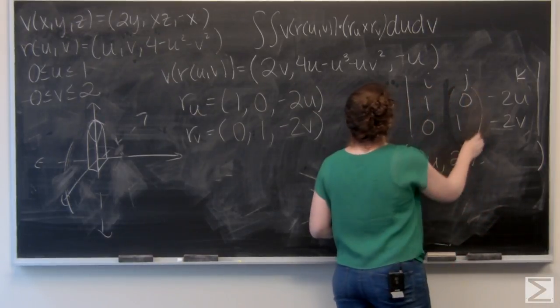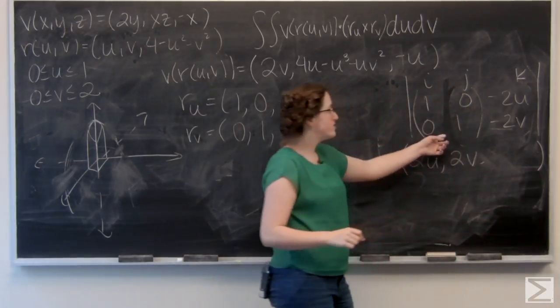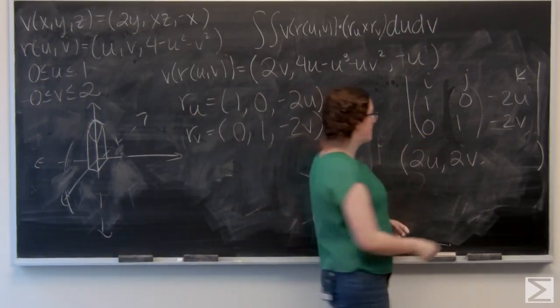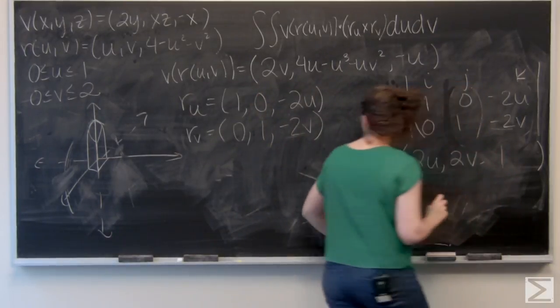And then for k, I've determined this 2 by 2 matrix here, which is just going to be 1.